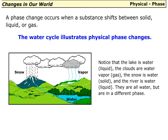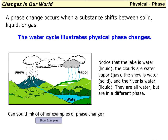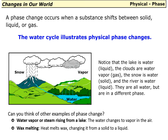The river is also water — they are all water but are in a different phase. Can you think of other examples of phase change? A couple of examples are: water vapor or steam rising from a lake, where the water changes to vapor in the air; and wax melting, where heat melts wax changing it from a solid to a liquid.